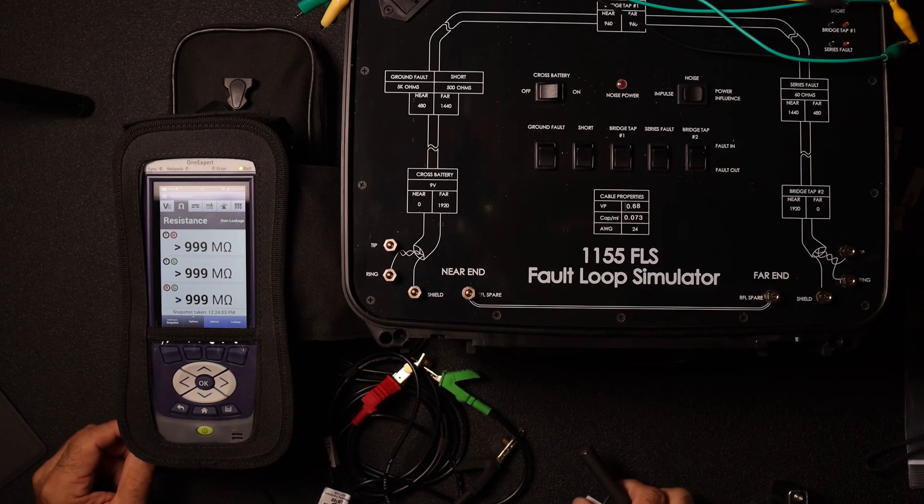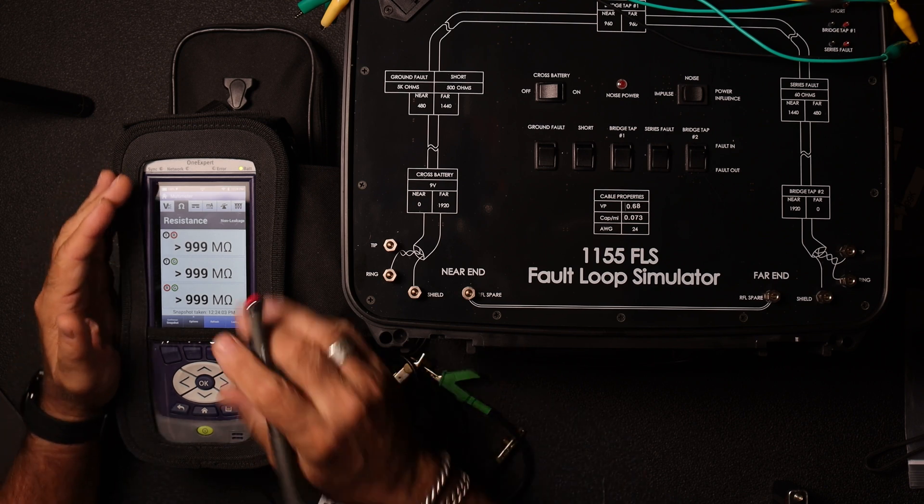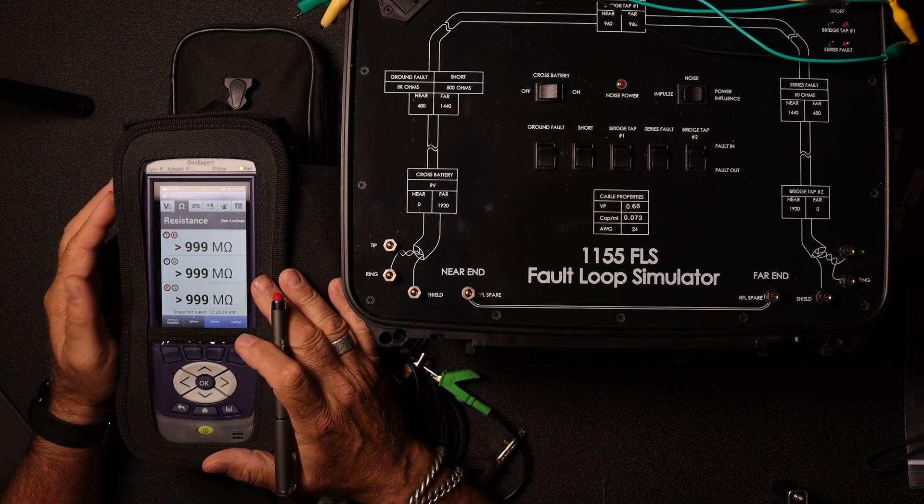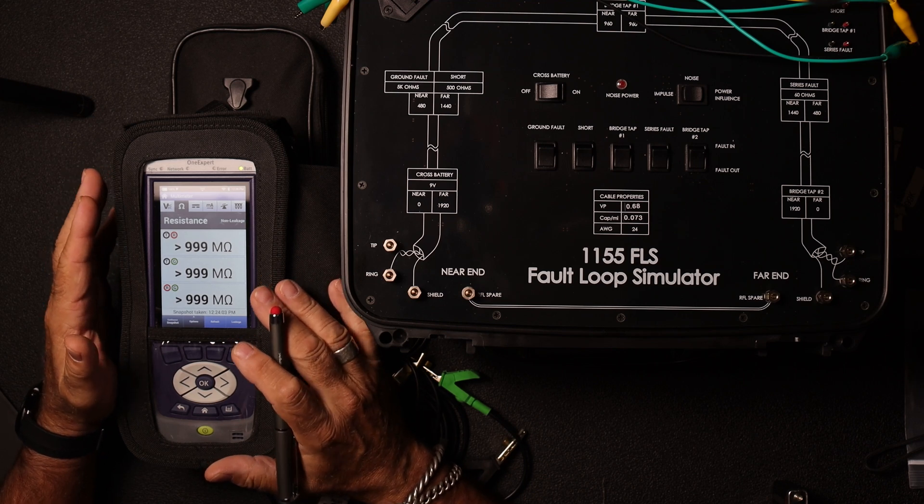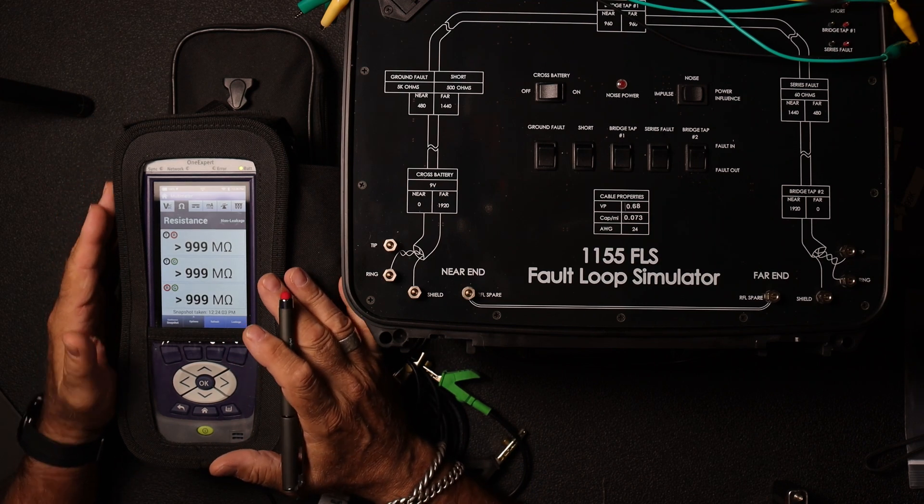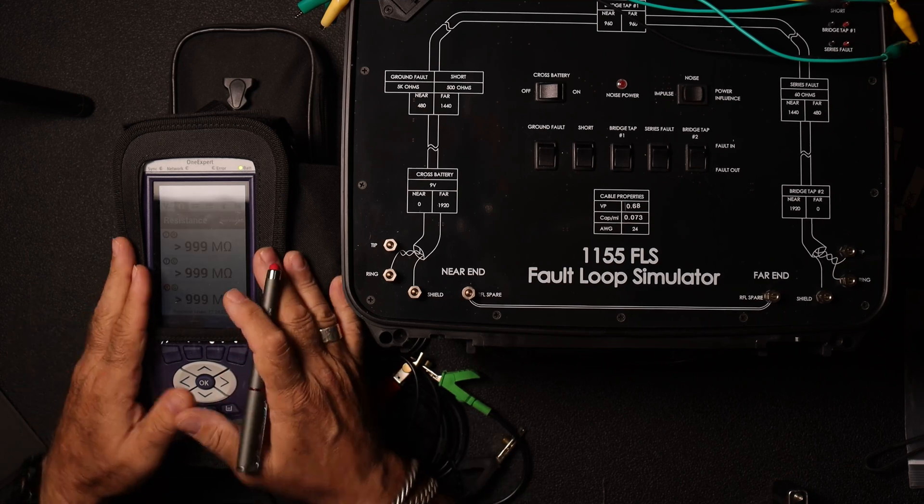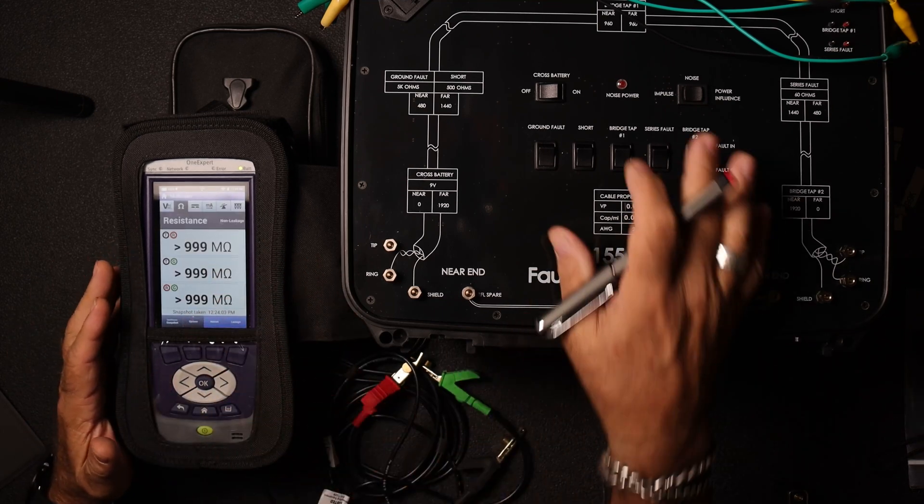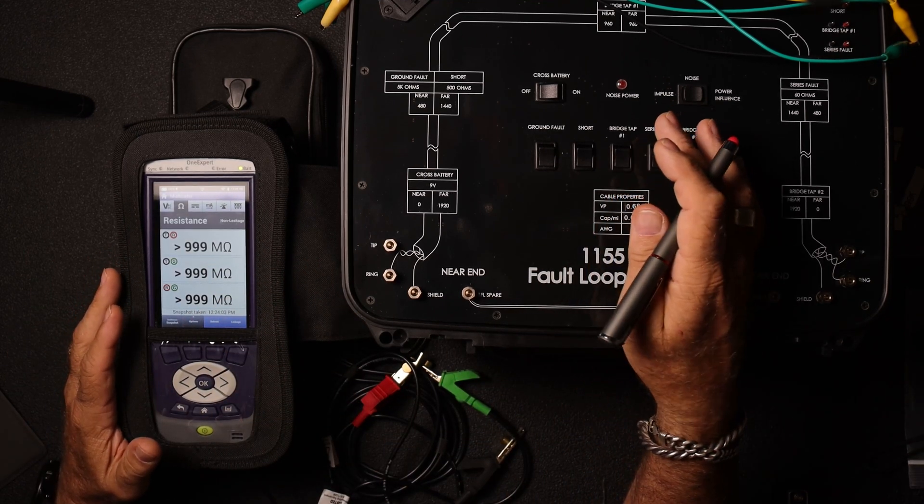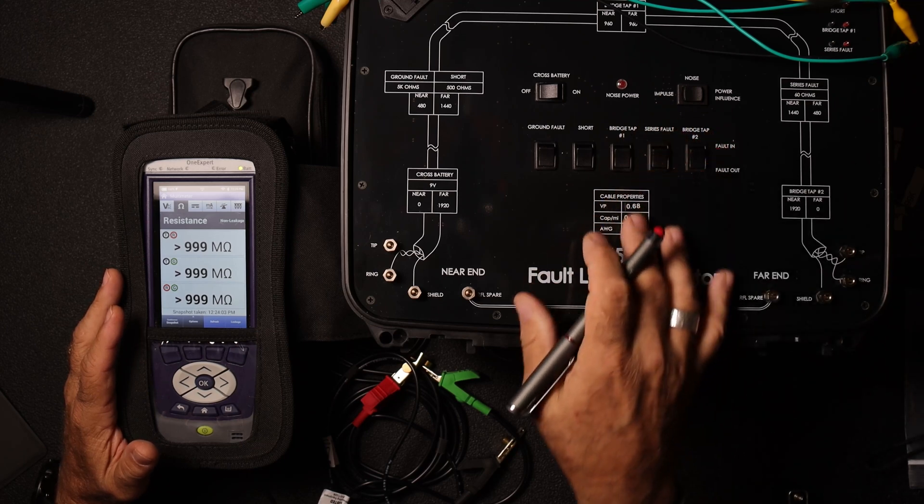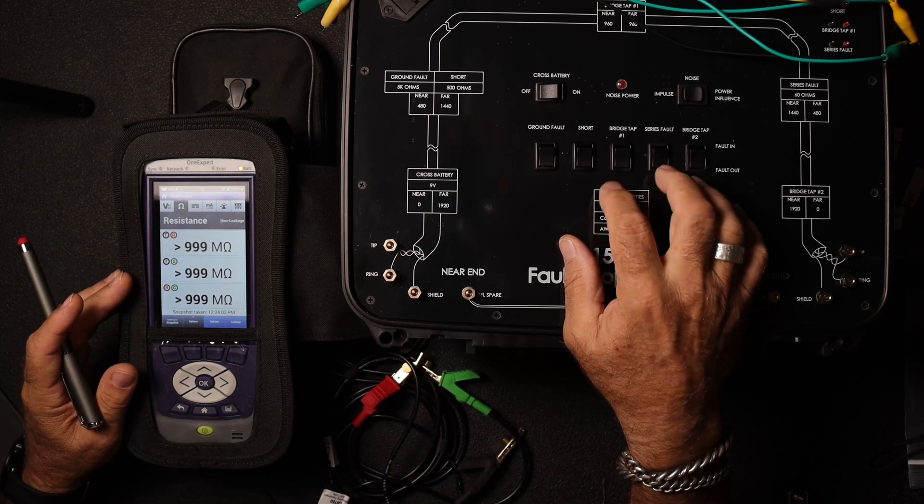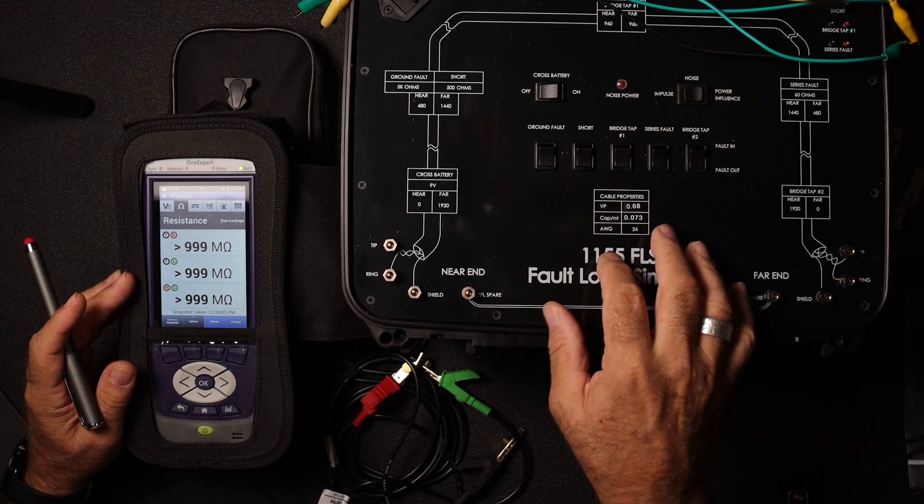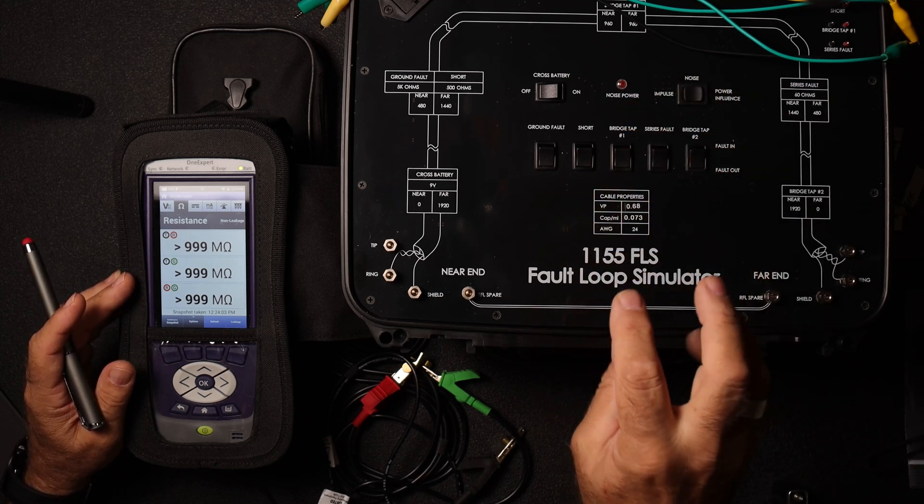Hi, this is Keith VanTech Consulting. We're going to stay on track today with the Onyx 580 and talk a little bit about one of the most confusing resistive faults that we can have in our outside plant. So this is the Onyx 580. This over here is a Greenlee FLS, it's a 1155 FLS fault loop simulator.